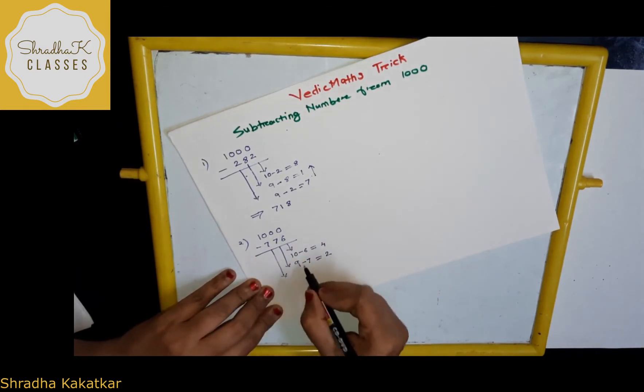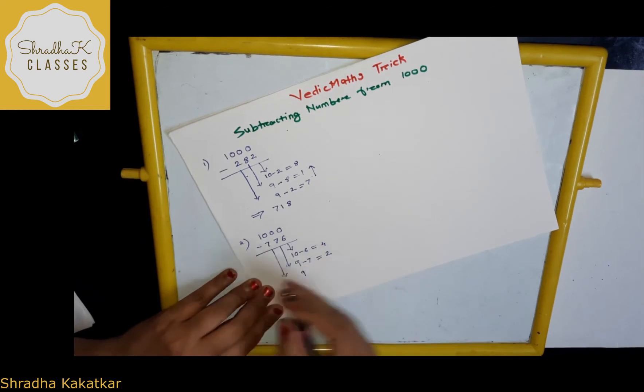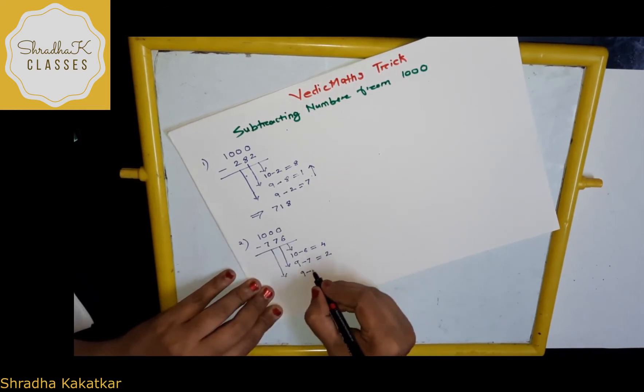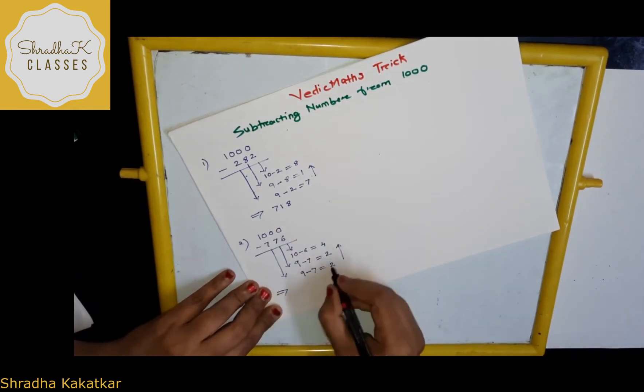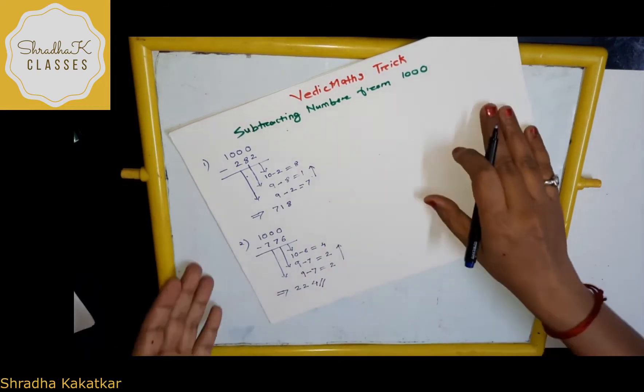Next, again, which number I have to take? 9 again. 9 again, I have to take. So, 9 minus 7, 2. Write this in this order. So, what is my answer? 2, 2, 4. Easy, very easy, isn't it?